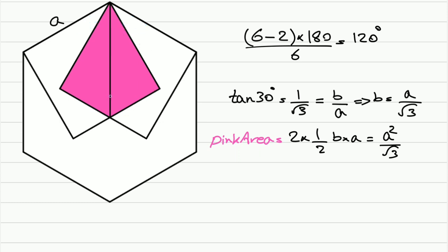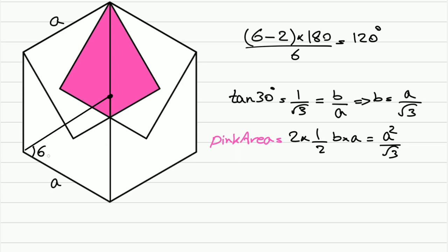Let's say this is the center. The hexagon is formed of six congruent equilateral triangles — this is one of them. These angles are 60 degrees, and that's why it's an equilateral triangle. So for the hexagon we have this.